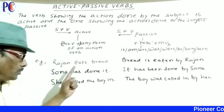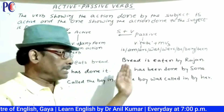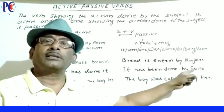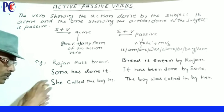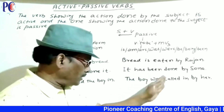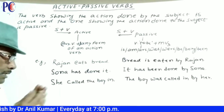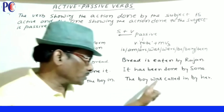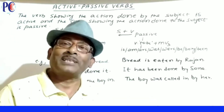For example — Rajan cuts bread: the cutting action is done on the bread by Rajan (passive: रोटी पर खाने का काम हो रहा है राजन के द्वारा). Sona has done it — active; its passive is 'It has been done by Sona.' She called the boy in — active (the calling action was done by 'she' as subject); passive: The boy was called in by her — यह passive है।